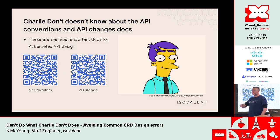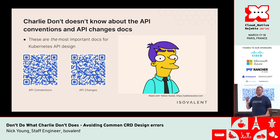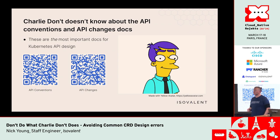Charlie Don't doesn't know about the API conventions and API changes docs. These are the most important docs for Kubernetes API design — ten years of experience condensed into about 10 to 15,000 words. They are dense but really valuable. If you are doing CRD design, you need to have these two links bookmarked and refer back to them often.